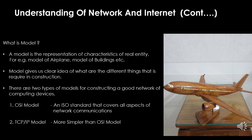Now think about how we can construct a network of computers. To construct anything effectively, it helps to have a model. Suppose you have to build an apartment — if you have a model for that, you can easily decide what the different steps are and when those steps are required. A model is a representation of the characteristics of a real entity, for example a model of an airplane or a model of a building. A model gives us a clear idea of what is required in construction. There are two types of models for constructing a network of computing devices: the OSI model and the TCP/IP model.